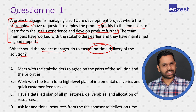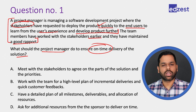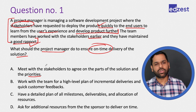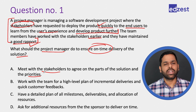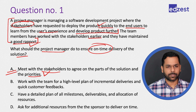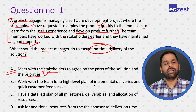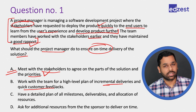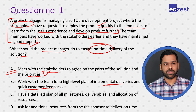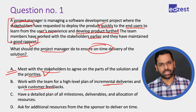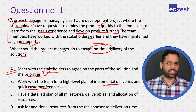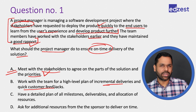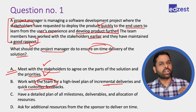Option A: Meet with the stakeholders to agree on the parts of the solution and priorities. The team has a good rapport with stakeholders, so talking to them to understand what parts of the solution to deliver first is a very good choice — we'll keep it. Option B: Work with the team for a high-level plan of incremental deliveries and quick customer feedback. Also good, but it's missing stakeholder involvement.